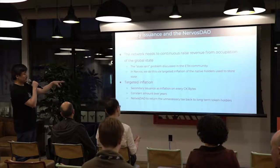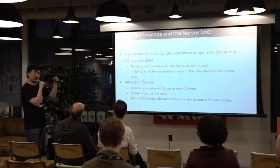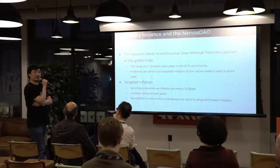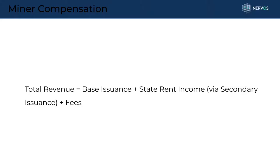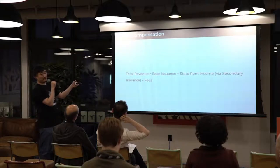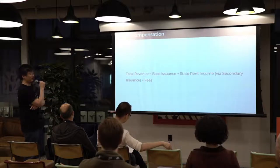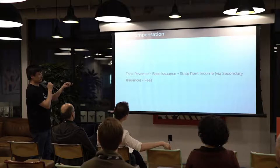This secondary issuance behaves like a cron job — every block there's a little bit of issuance. Depending on how long you store your data in the blockchain, that's the duration you'll be paying rent via targeted inflation. Miner compensation therefore includes: base issuance which eventually drops to zero like Bitcoin, plus secondary issuance which is always there as constant state rent income, guaranteeing miners a predictable income even if there are no transactions at all. Transaction fees work much like Ethereum's gas model on top of this.